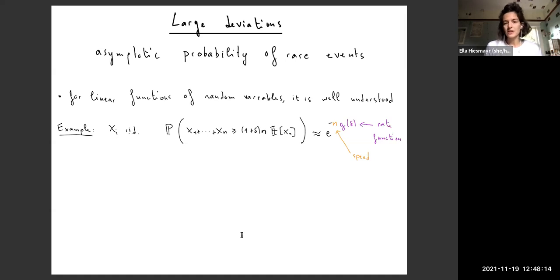A very short comment about large deviations. Large deviations are generally about the asymptotic probability of rare events. They're pretty well understood by now for linear functions of random variables. For instance, for a sum of IID random variables, which is the simplest example, we can derive that the probability that the sum exceeds its expected value by this factor of one plus delta is approximately e to the minus n times a function of delta. This part of the exponent that depends on n is usually called the speed and the constant we multiply with that depends on delta is called the rate function.